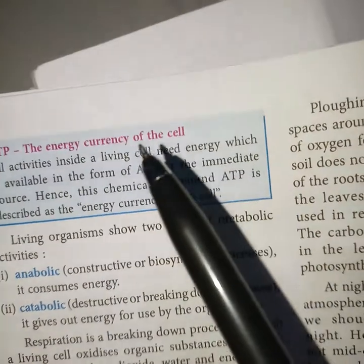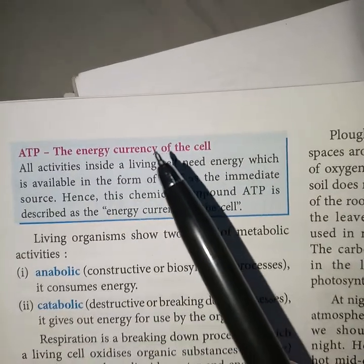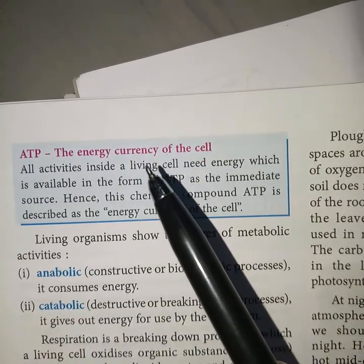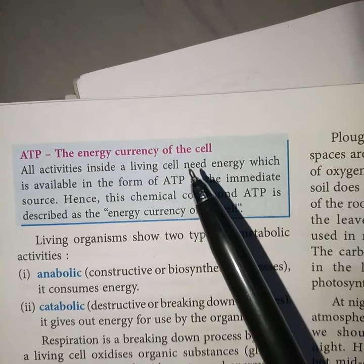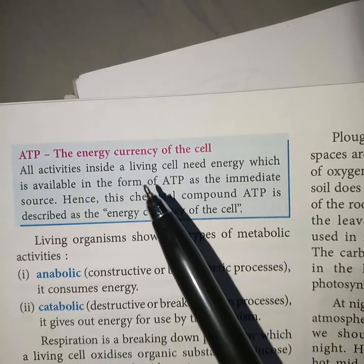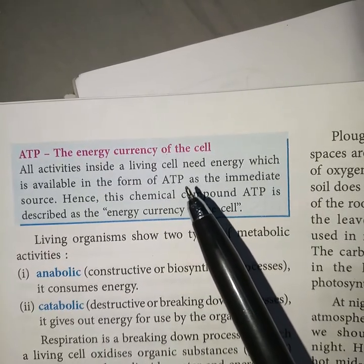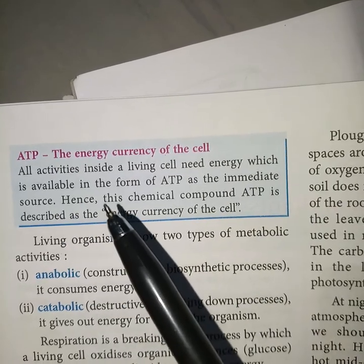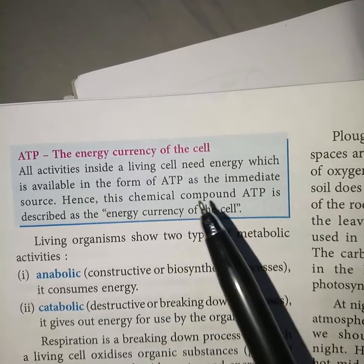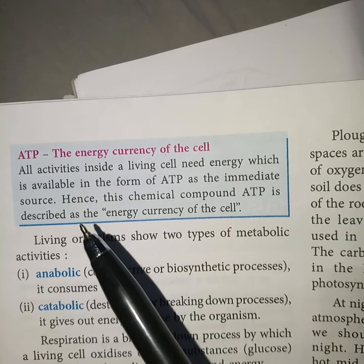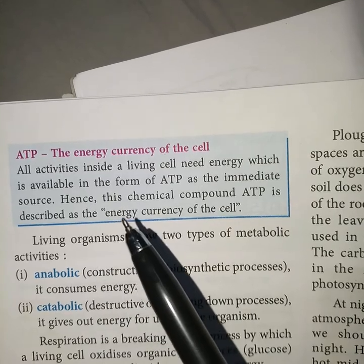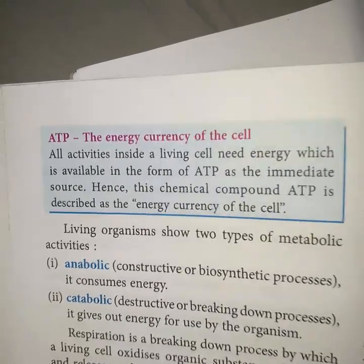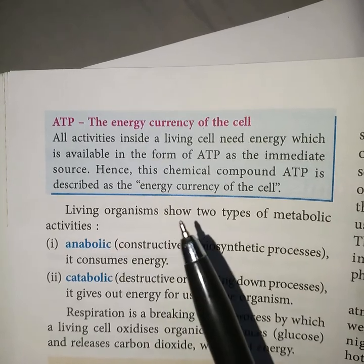ATP is the energy currency of the cell. All activities inside living organisms require energy, which is available in the form of ATP as the immediate source. Hence this chemical compound ATP is described as the energy currency of the cell.